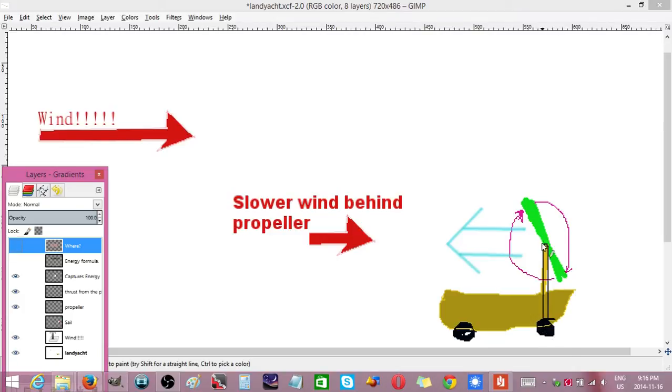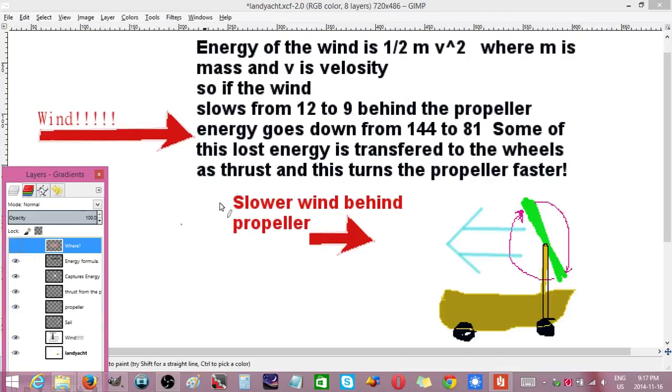But the thrust is also slowing down the wind right behind the propeller. So this area of wind here has been slowed down.